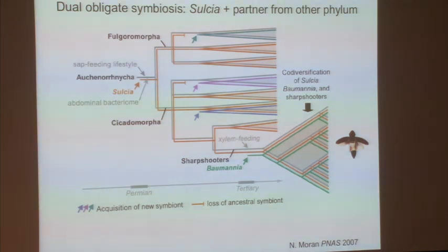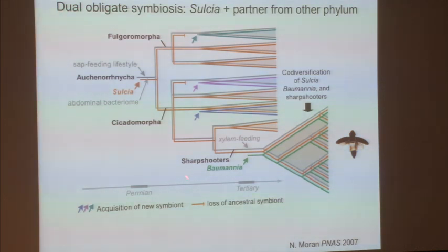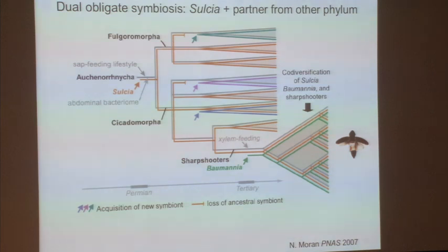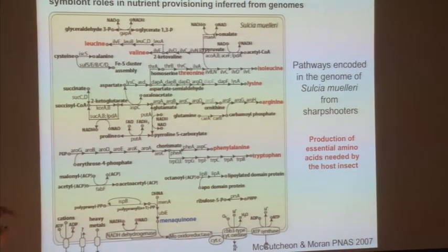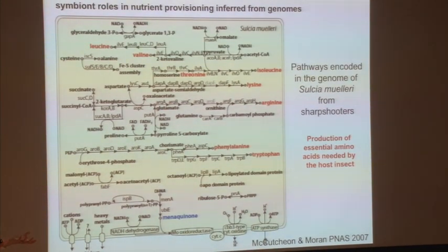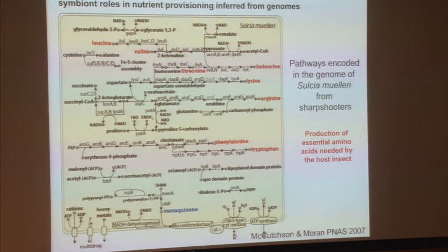Together with John McCutcheon, who was a postdoc in the lab and is now at University of Montana, when next-gen sequencing came out he sequenced the very first full genome sequence from a bacterium using next-gen sequencing — the sequence of Sulcia. Previously we'd sequenced the Baumannia genome in collaboration with Jonathan Eisen, but didn't get all of Sulcia. With 454 sequencing it was pretty easy, and we could start to put together what these different bacteria are doing in these complex symbioses — and why it gets complex rather than just sticking with one bacterium.